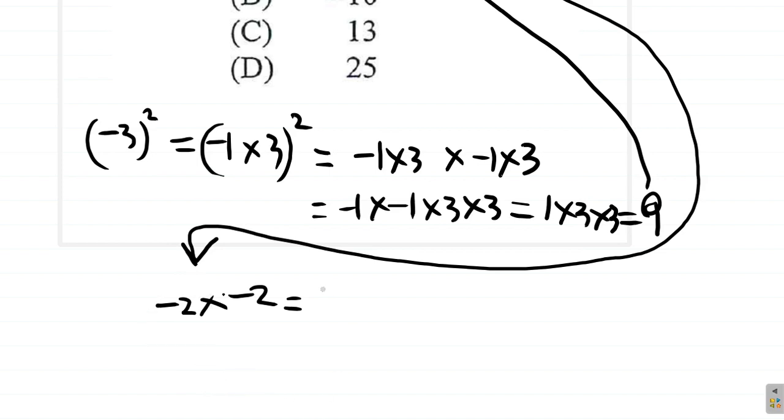So, it's negative 1 times 2, times negative 1 times 2. Alright. So, it's negative 1 times negative 1, times 2 times 2.